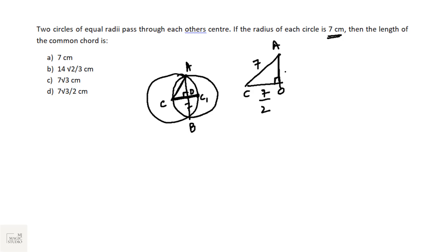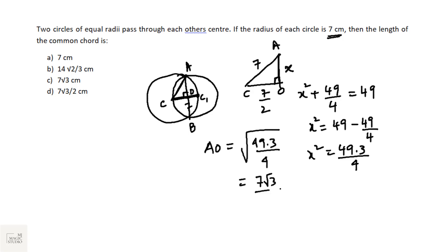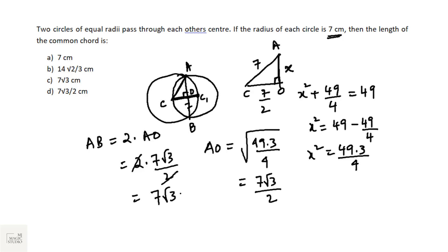Using Pythagoras' theorem in triangle AOC: x² + (7/2)² = 7², so x² = 49 − 49/4 = (49 × 3)/4. Therefore AO = 7√3/2. The full length of common chord AB = 2 × AO = 2 × (7√3/2) = 7√3 centimeters. Answer: option C, 7√3 cm.